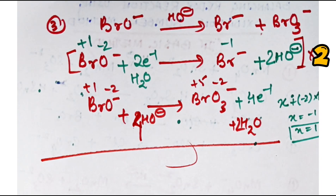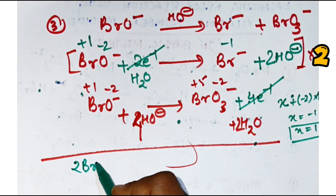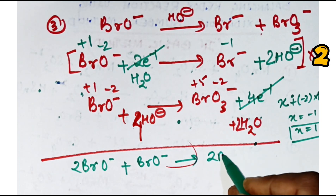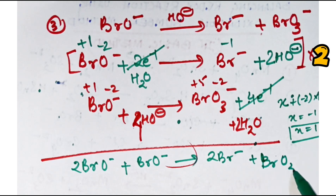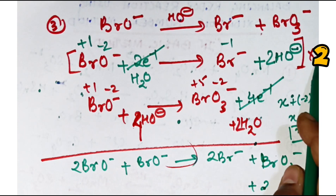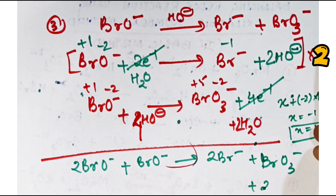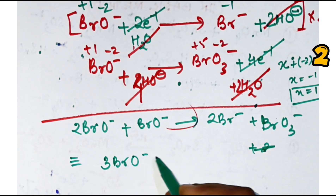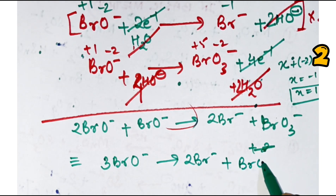Now write: 2BrO⁻ plus BrO⁻ gives 2Br⁻ plus BrO₃⁻ plus two water molecules. Balancing water and hydroxyl: two water molecules on each side cancel out, and hydroxyl ions also cancel. So the final equation is 3BrO⁻ giving 2Br⁻ plus BrO₃⁻. This is how equation three is done.